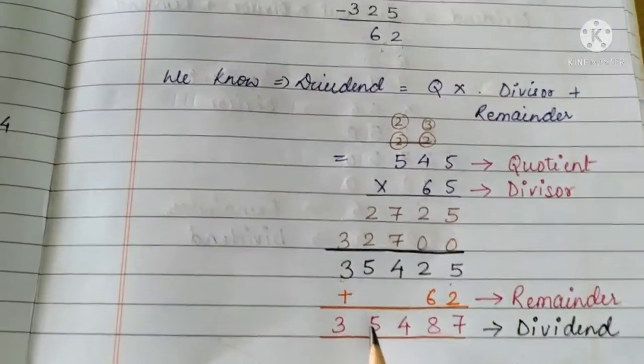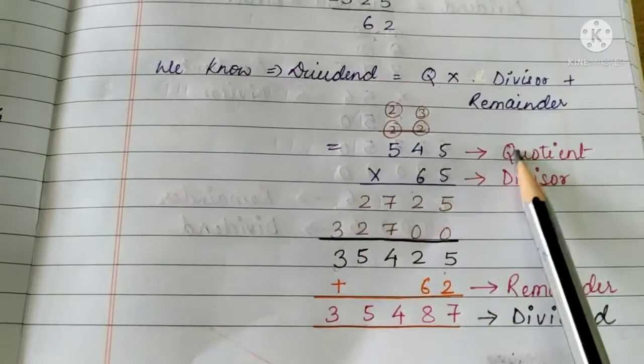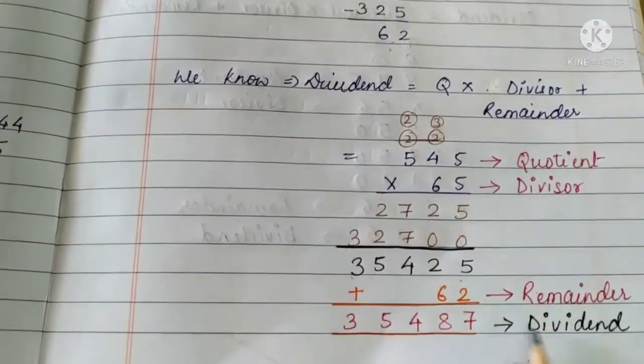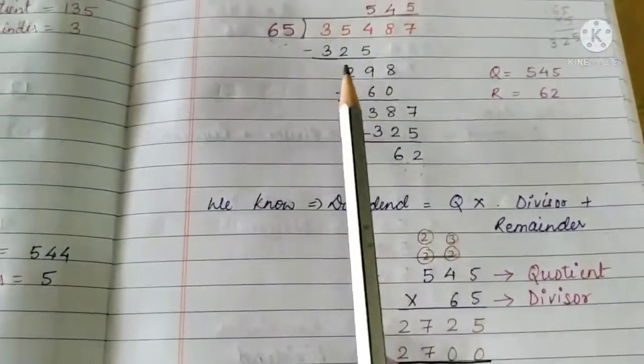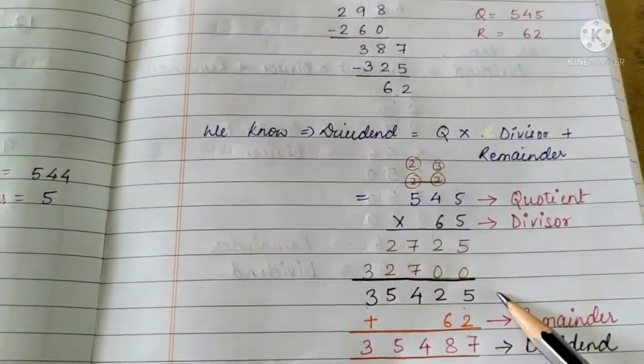So, what is the answer here now? 35,487. Now, quotient multiplied by divisor plus remainder equals to our dividend which is 35,487. So, our answer is correct.